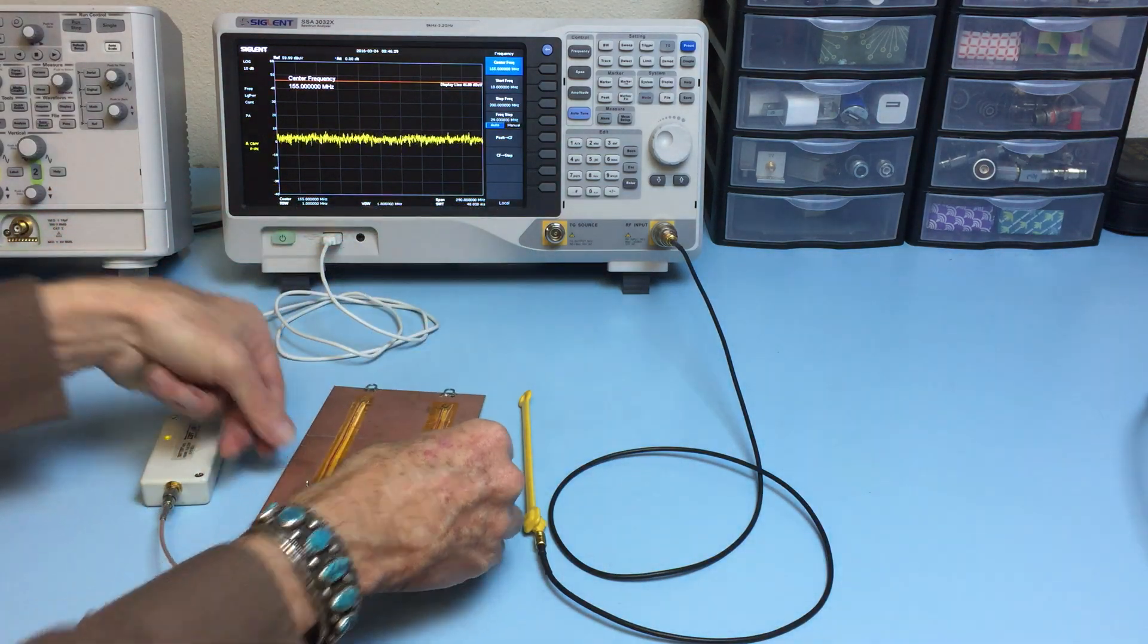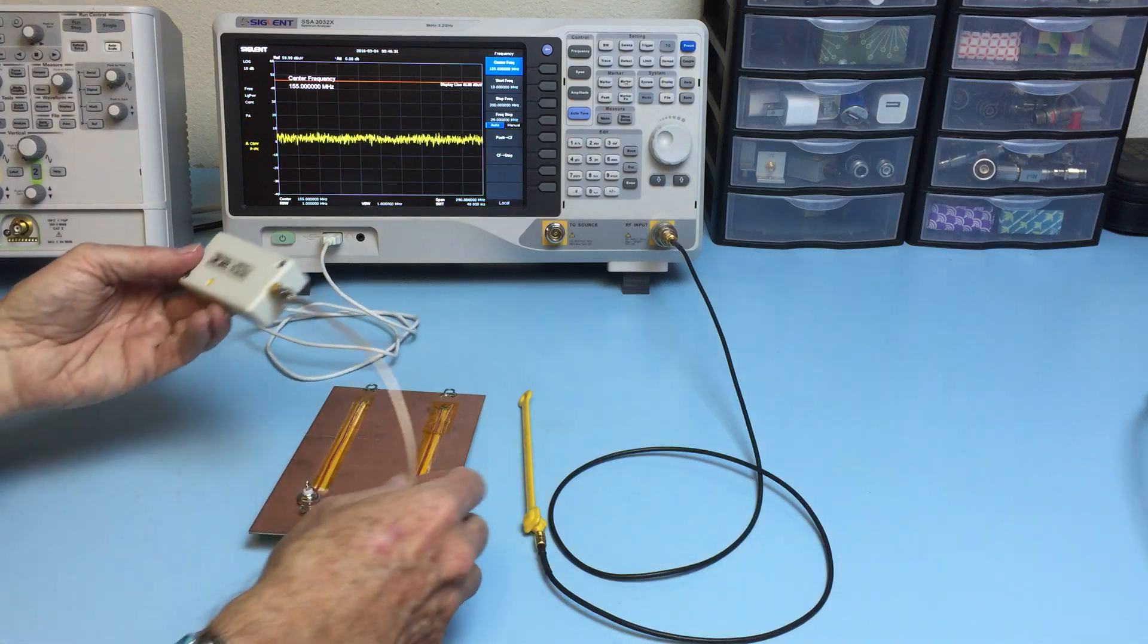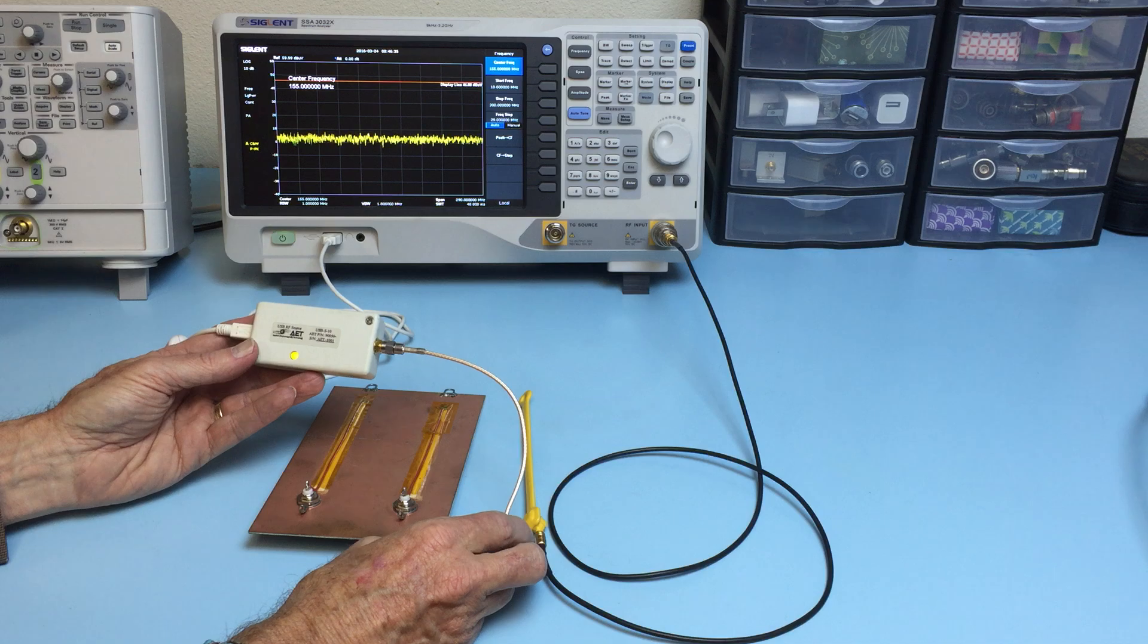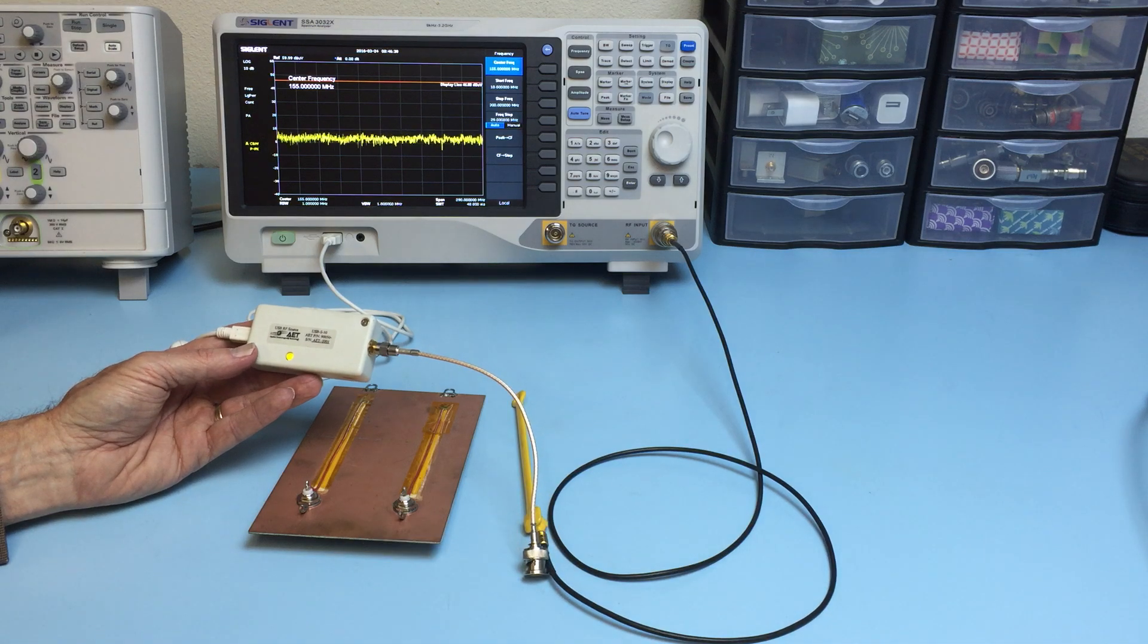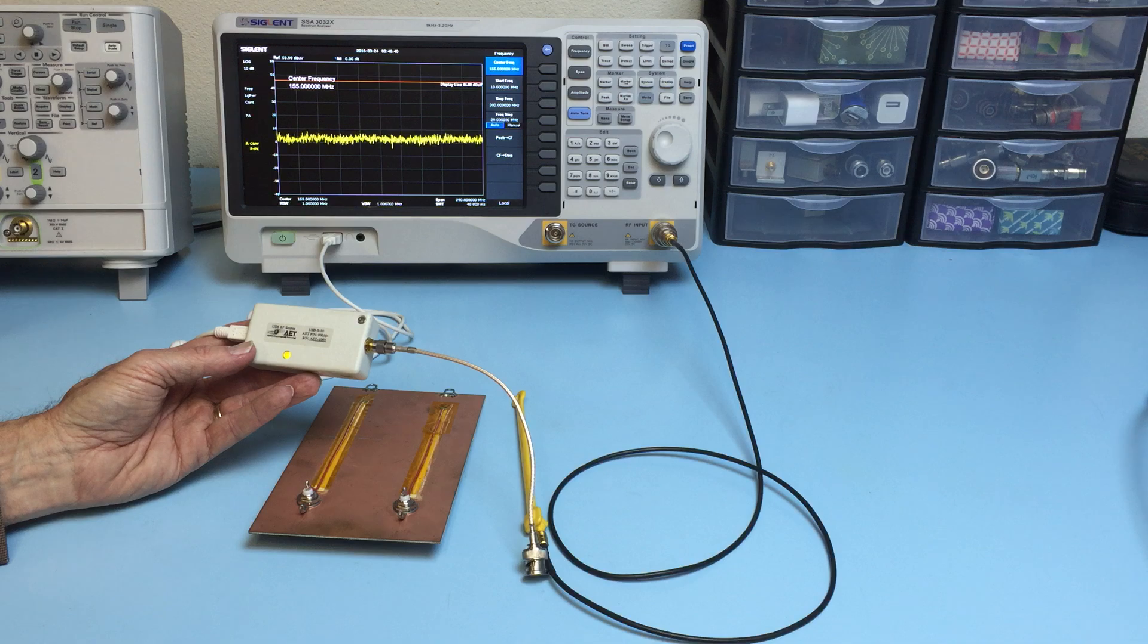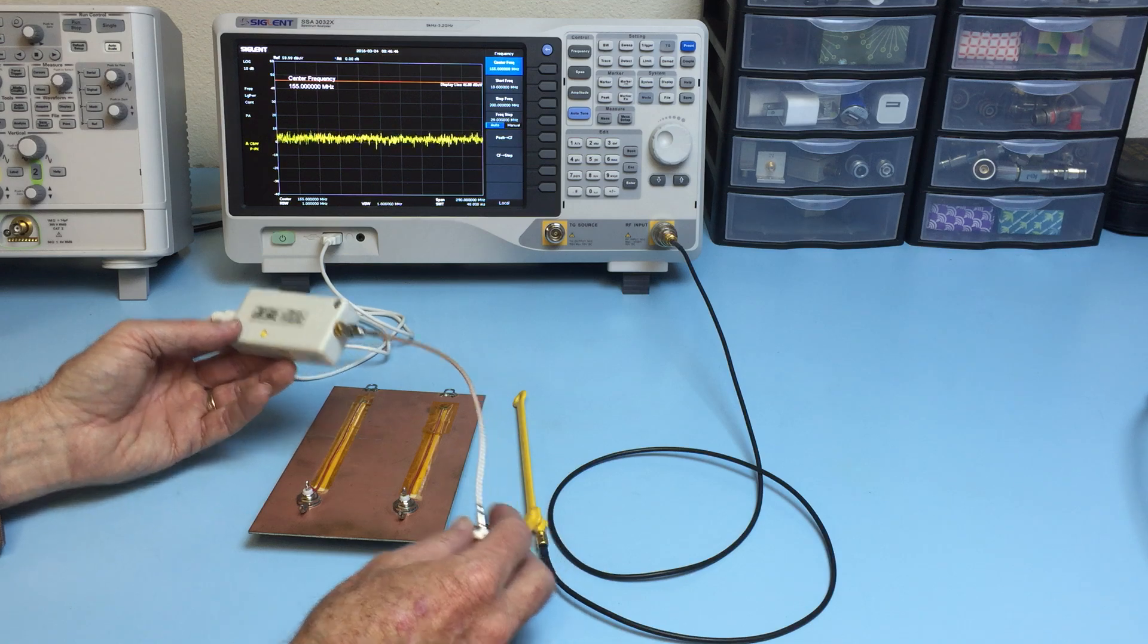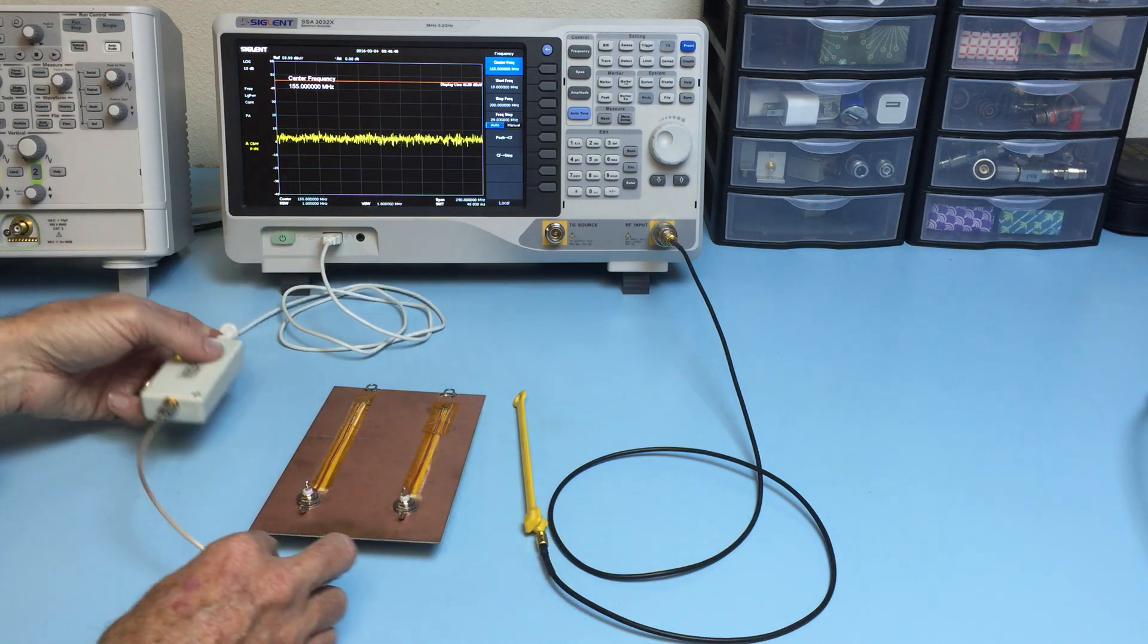Now we'll be driving these traces with this pulse generator. This is actually designed to be a harmonic comb generator and it produces a series of 10 megahertz harmonic signals. And we'll be connecting those up to each trace.